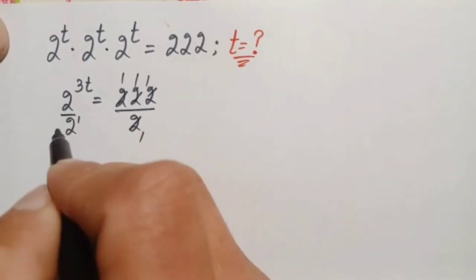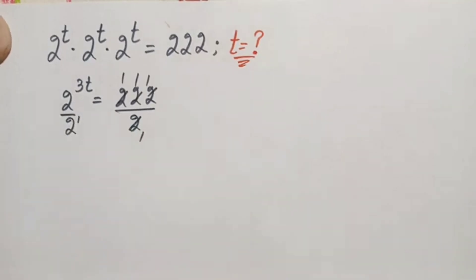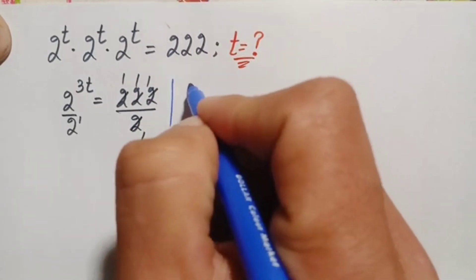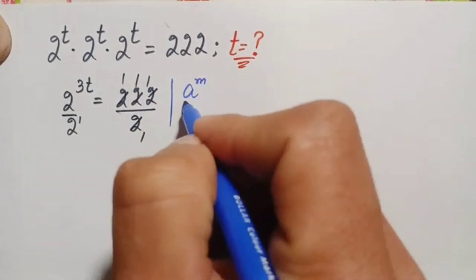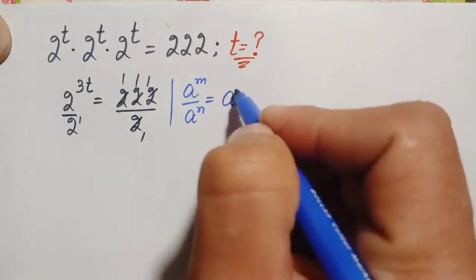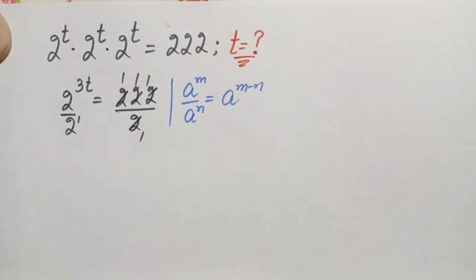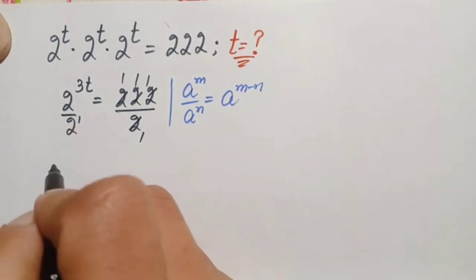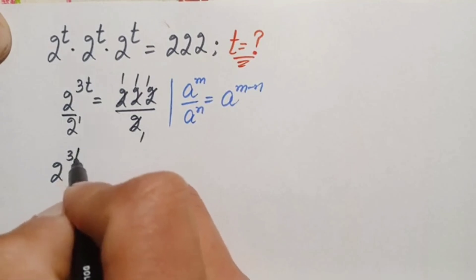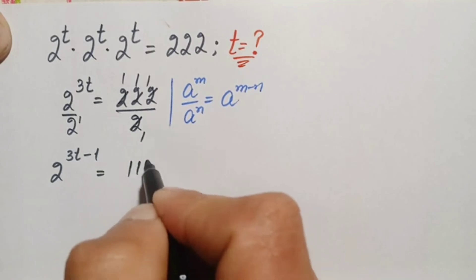On the left hand side we will use the same-base exponential identity: a raised to the power m divided by a raised to the power n equals a raised to the power m minus n. Using this identity, the left hand side becomes 2 raised to the power 3t minus 1, which is equal to 111.